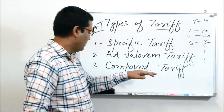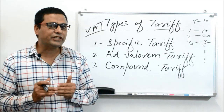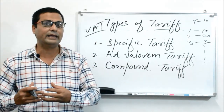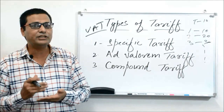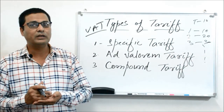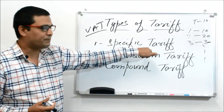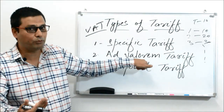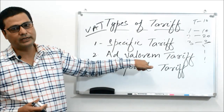The third type is the compound tariff, which is a combination of a specific tariff and an ad valorem tariff — that is why it is called a compound tariff. In other words, it is a tax on imported goods consisting of both a fixed amount per physical unit and an amount based on the value of the imported goods. To summarize: specific tariff is per physical unit, ad valorem is based on the value of the imported product, and compound is a combination of both.